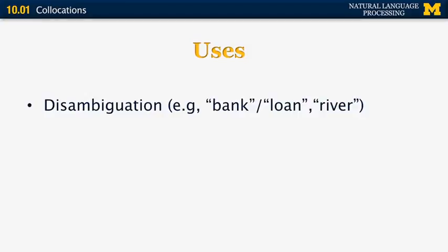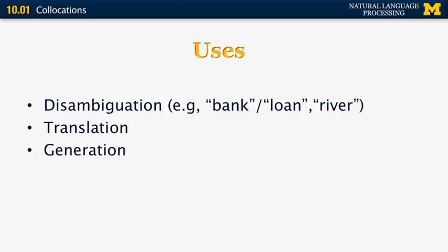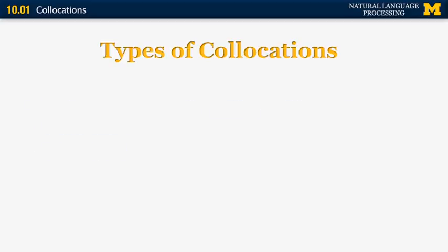There are many uses for collocations. They can be used for disambiguation — if we have an ambiguous word like bank, and another word near it such as loan or river as part of a collocation, we can disambiguate the word bank very easily. Collocations are also very useful for translation and for text generation.